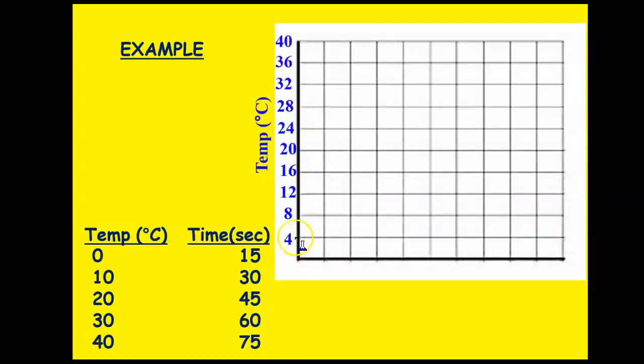That would make the increments for each line be worth 4 degrees Celsius. So when I put that in, the first line is 4, I add another 4 to make 8, another 4 to make 12, and I just keep adding 4 until I get to the highest value, which in this case would be 40. And then here's my label: temperature, and then the value degrees Celsius.